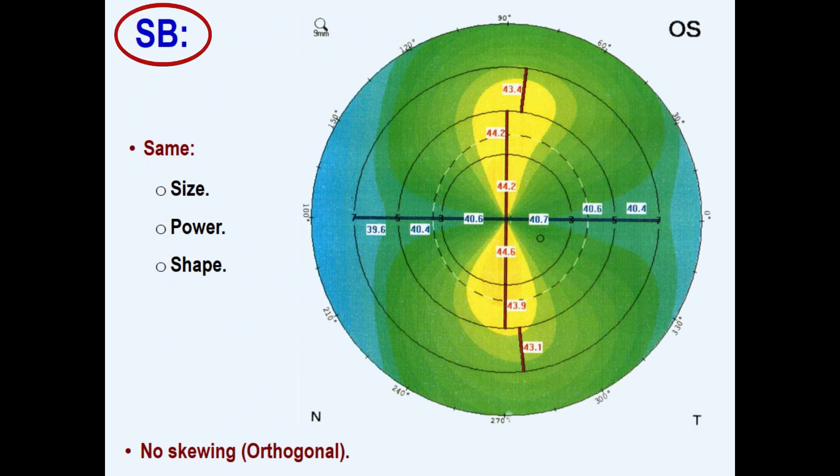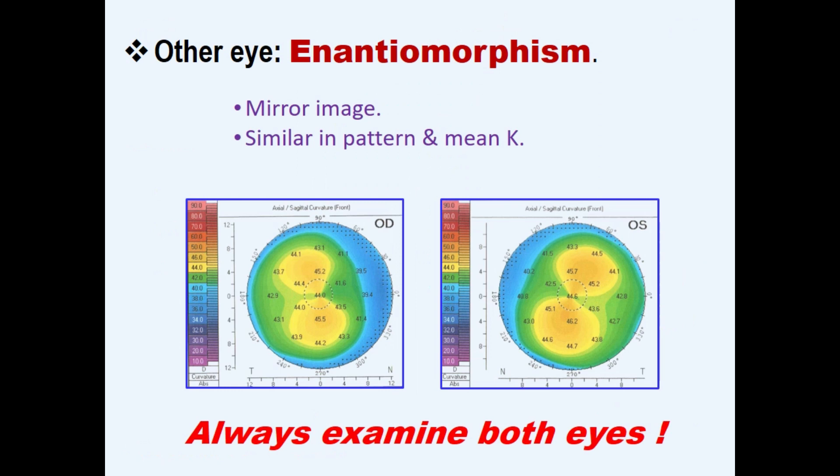Symmetric means both loops of the bowtie are of the same size, shape, and power. Topographies of fellow eyes tend to be mirror images of each other. This is called enantiomorphism. The difference in pattern and the mean K is small.